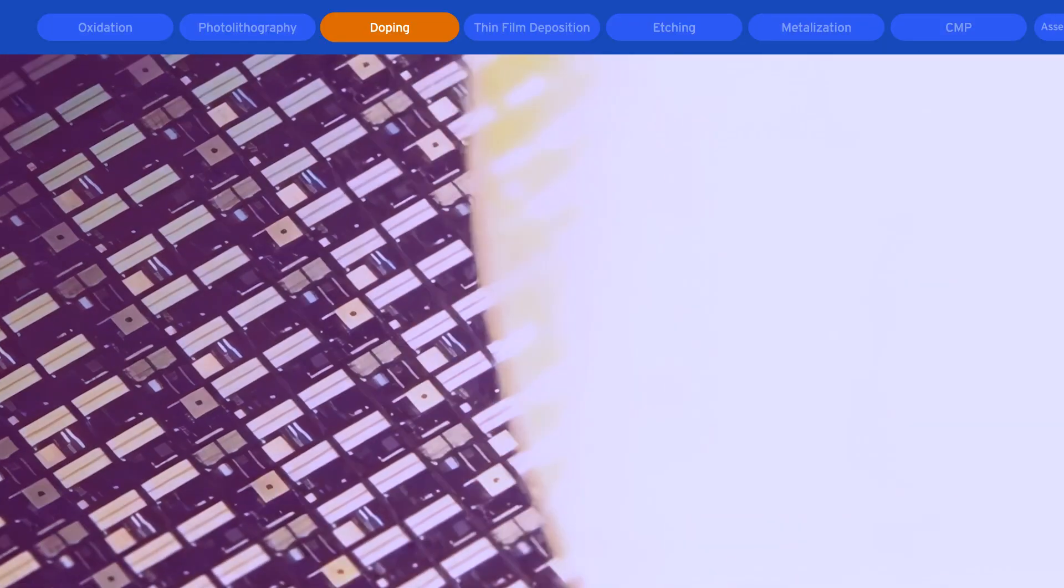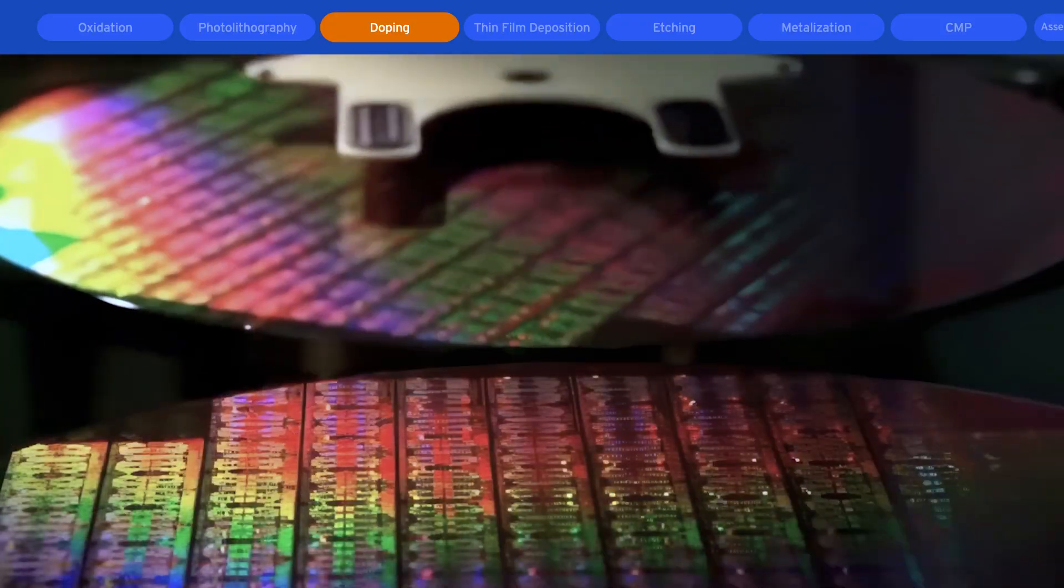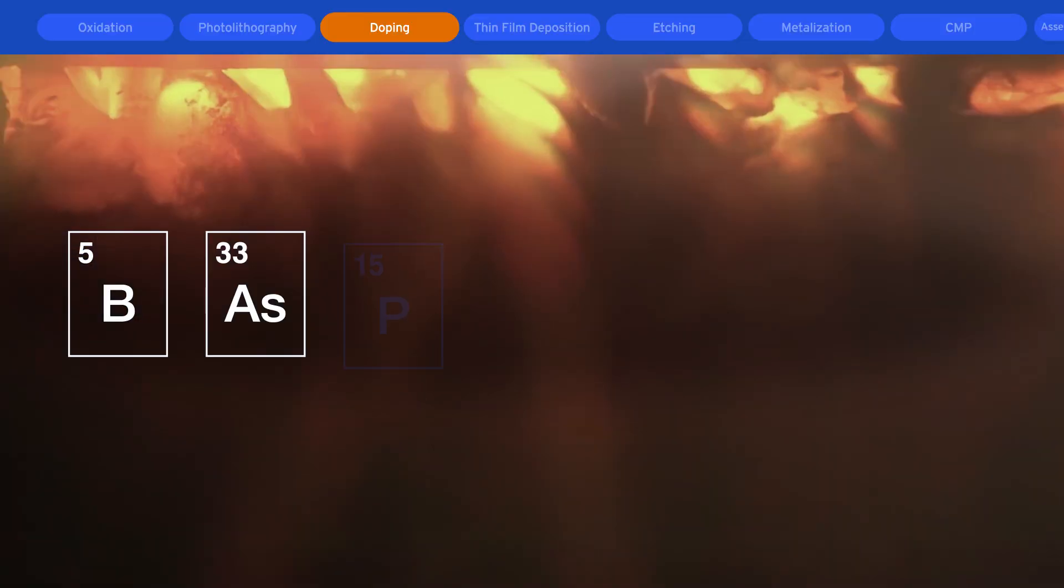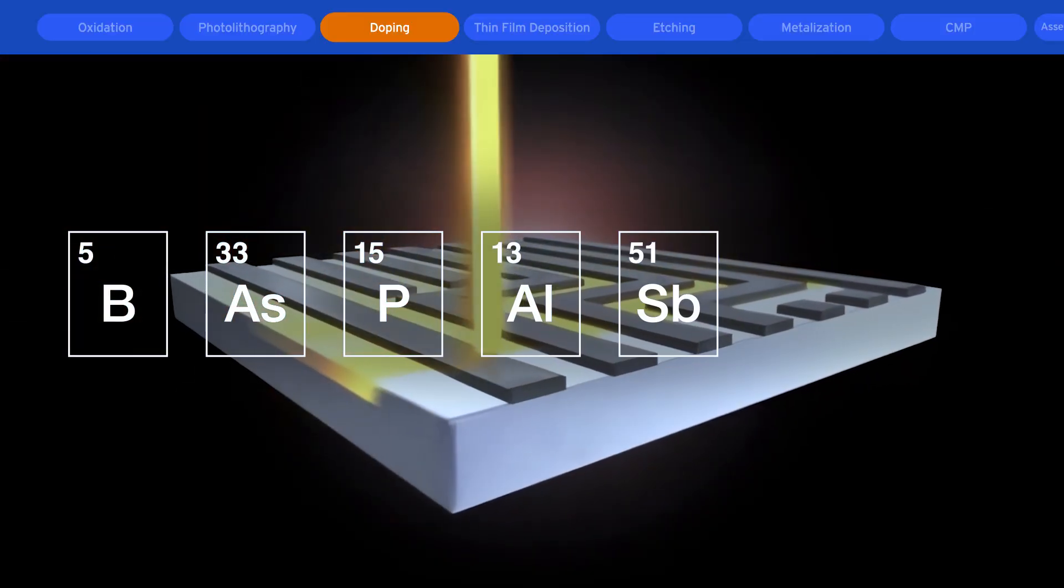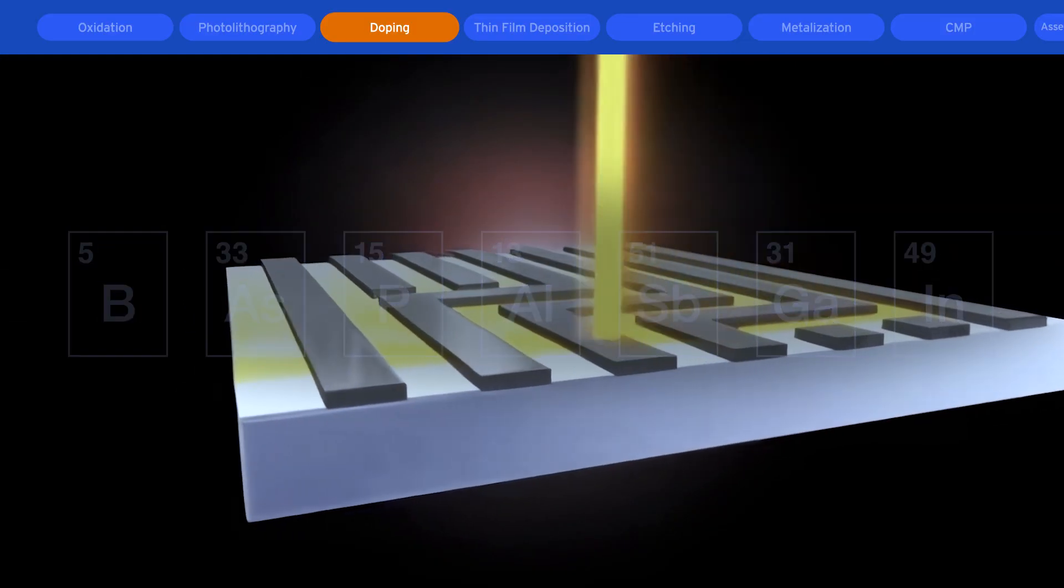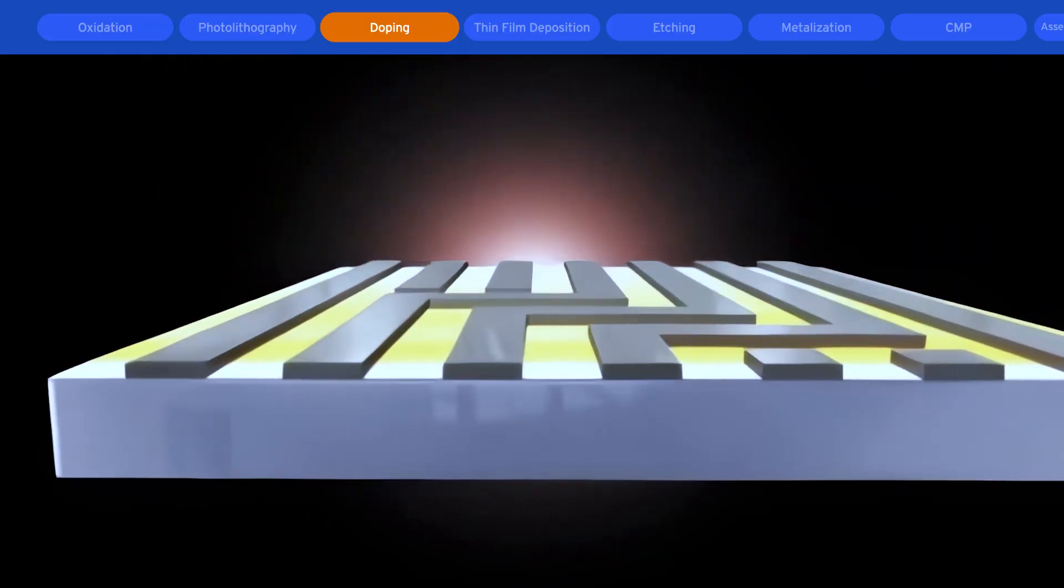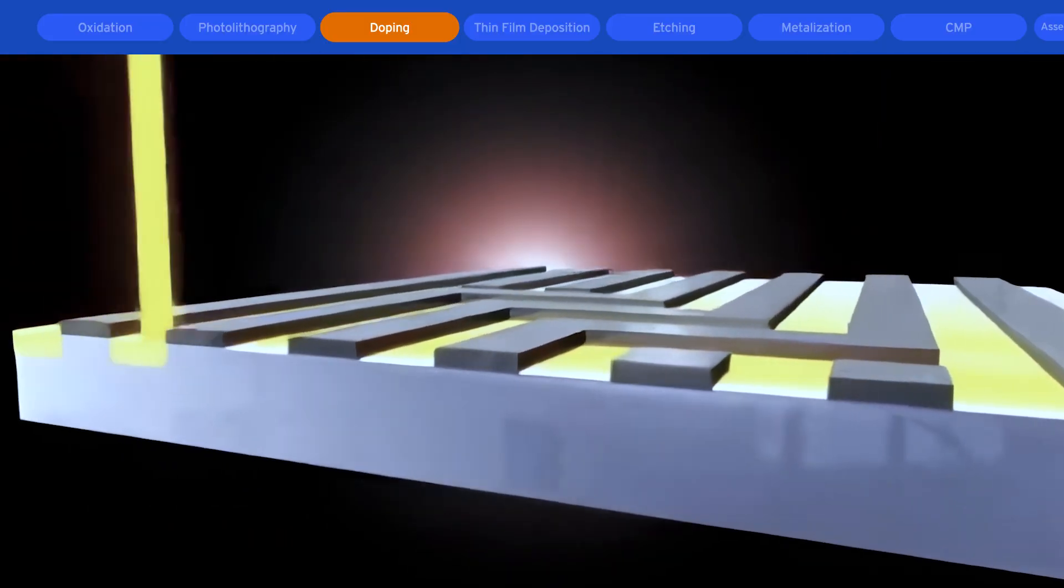Silicon is not naturally conductive. To make silicon a semiconducting device, atoms from gas sources of boron, arsenic, phosphorus, aluminum, antimony, gallium, or indium are driven into the silicon at high energy or temperature through ion implantation or diffusion.